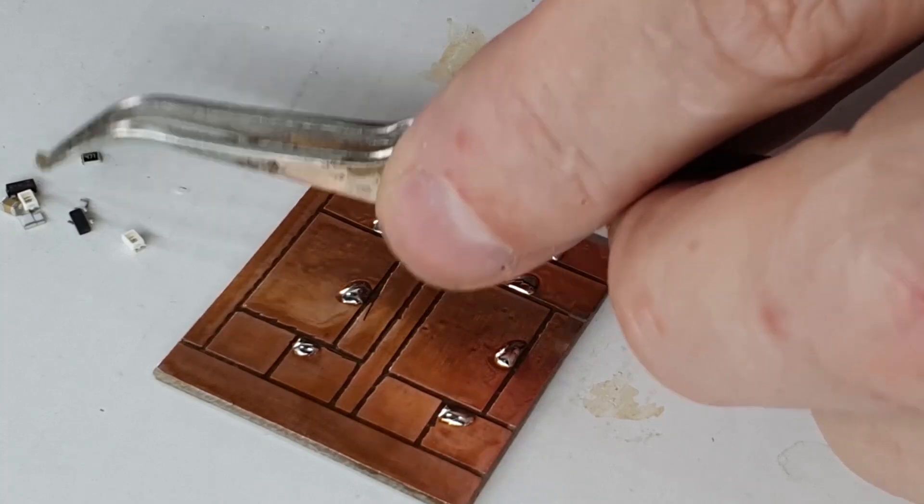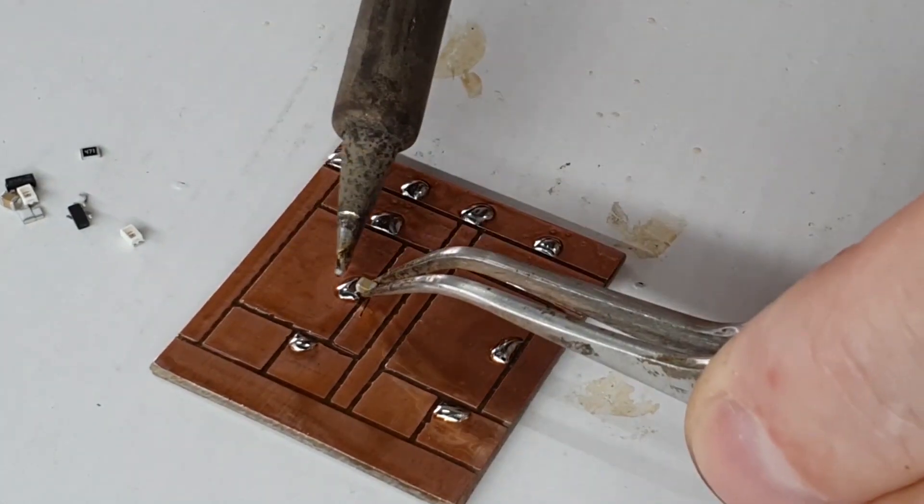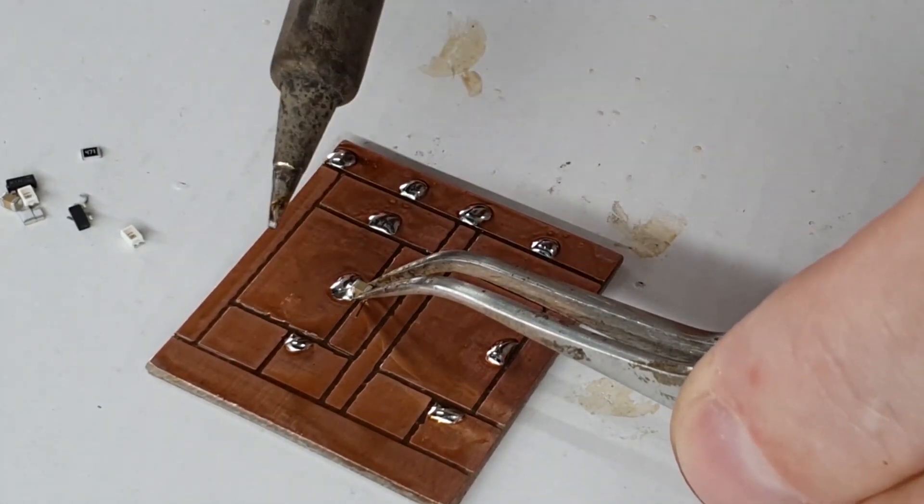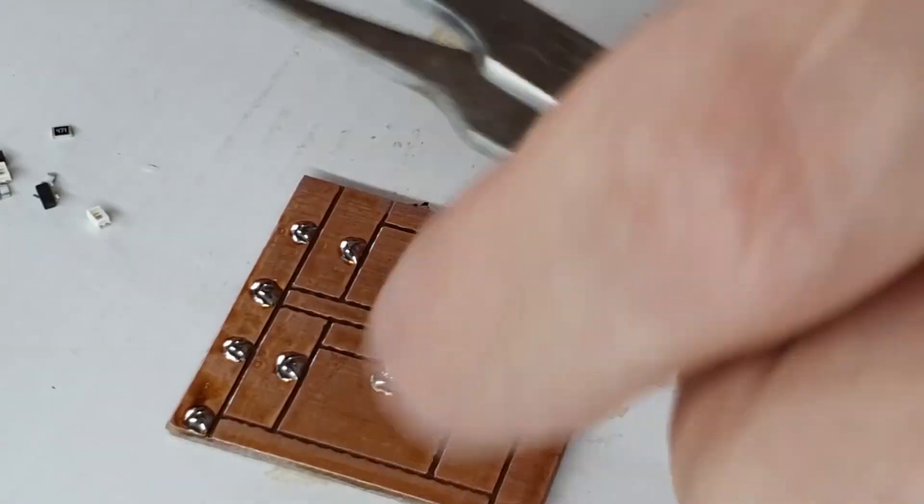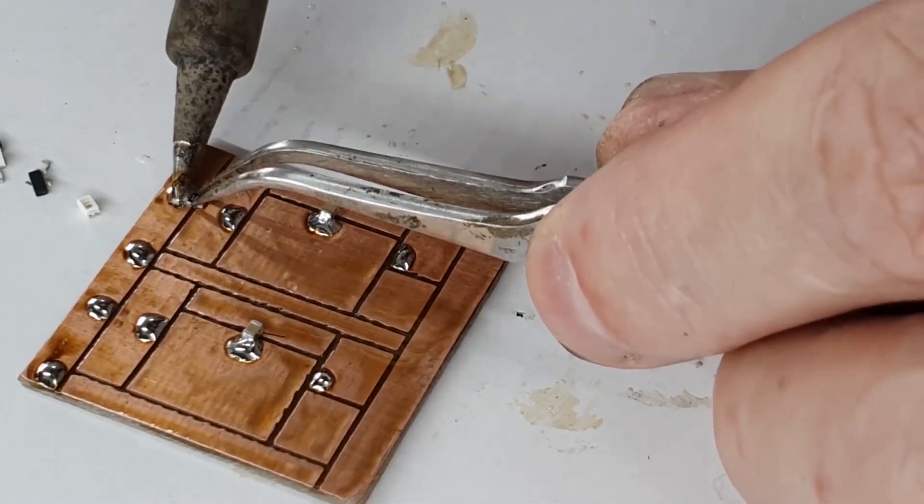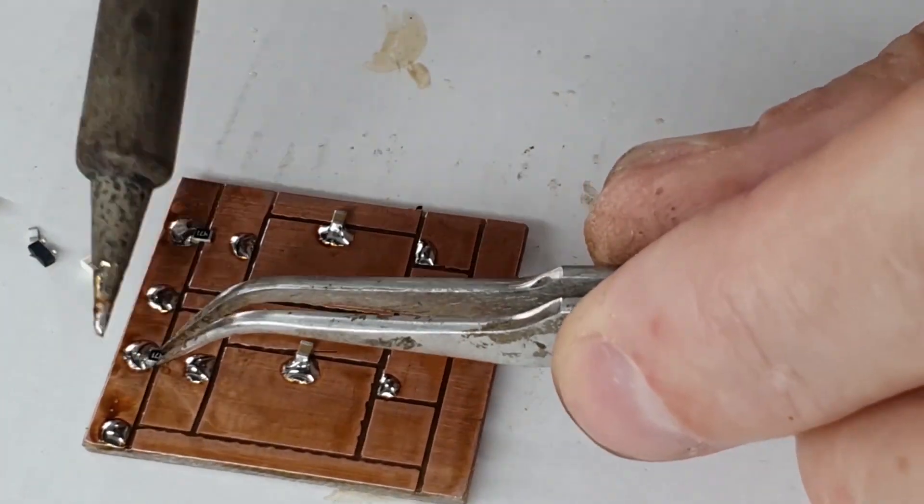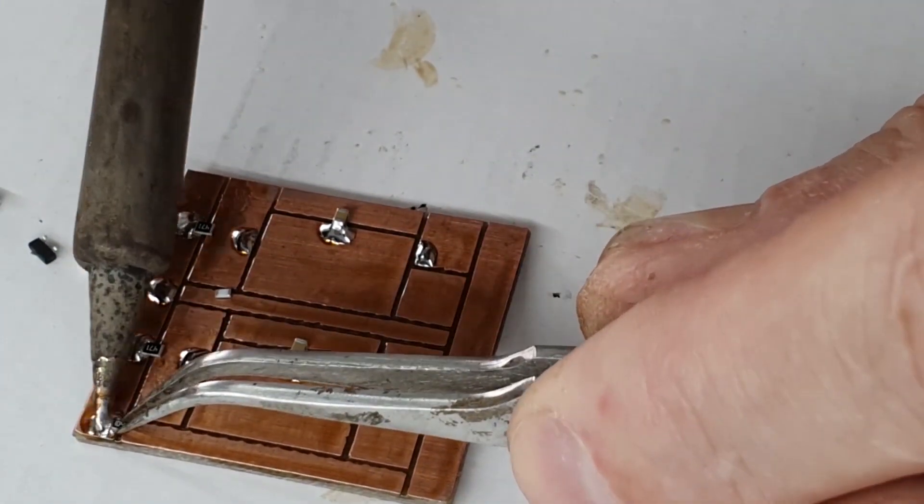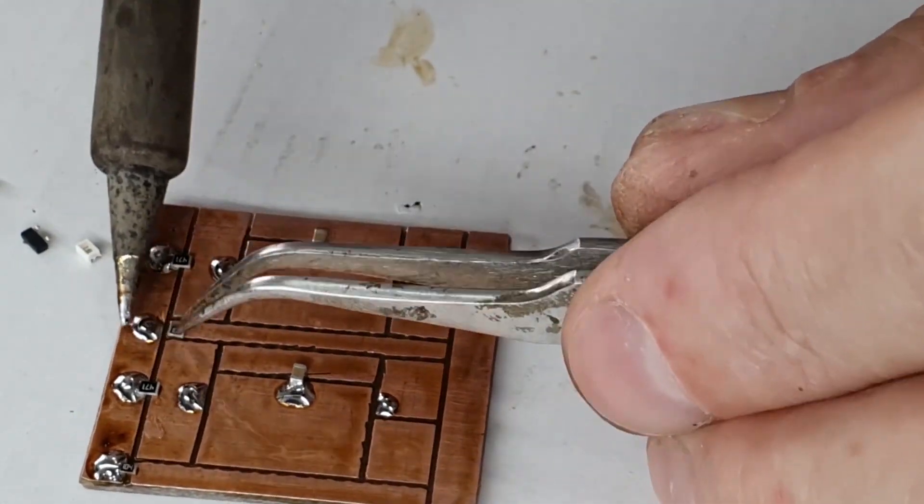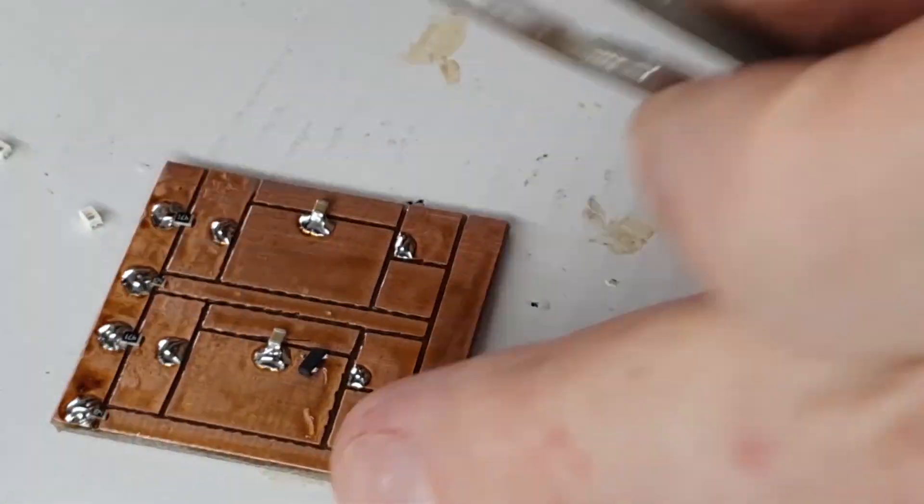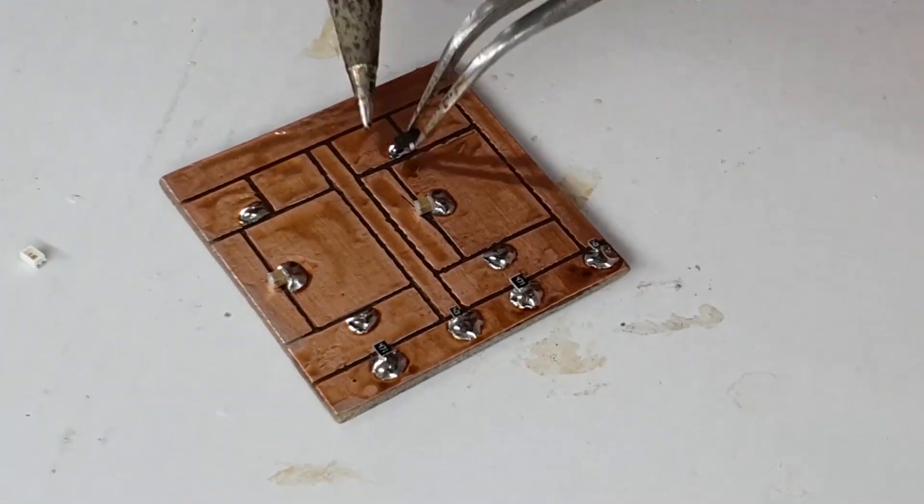Using tweezers to hold the parts, remelt each solder blob and ease the part down into position. Don't move until the solder is cooled. If the part does not lie flat, gently push it down with the tip of your tweezers while reheating the solder joint. Hold it until the solder cools.